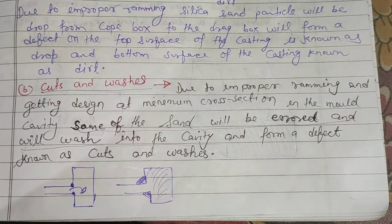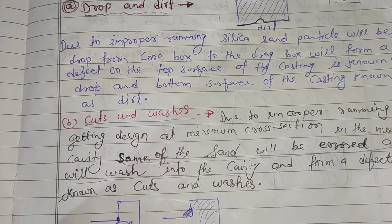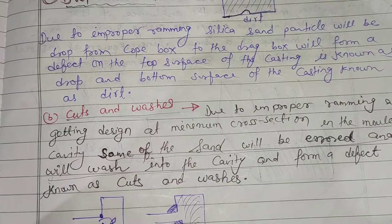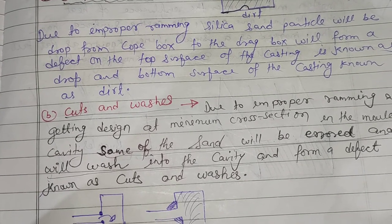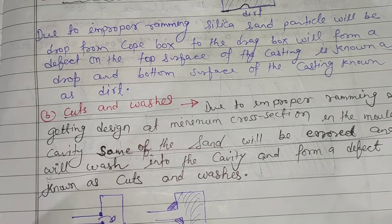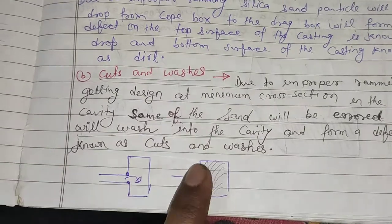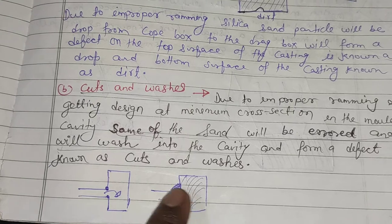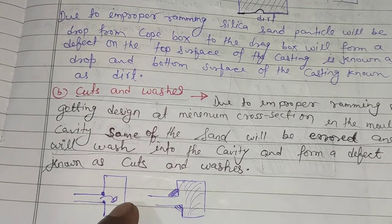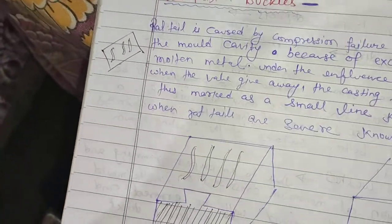The third molding defect is cuts and washes. Due to improper ramming and a poorly designed gate at minimum cross-section in the mold cavity, some of the sand will be eroded and washed into the cavity, forming a defect known as cuts and washes. Due to improper ramming, the corner region causes cuts and washes.